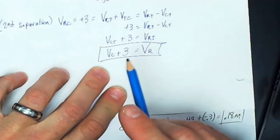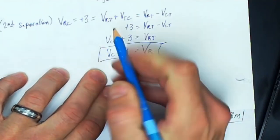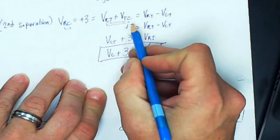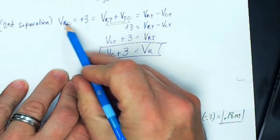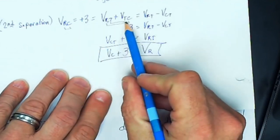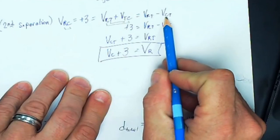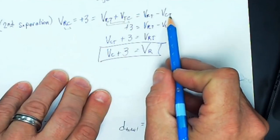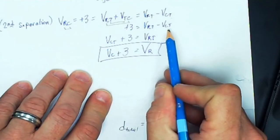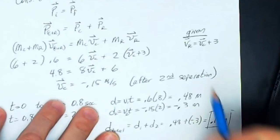Using the relative velocity method: V_RT plus V_TC equals V_RC. The velocity of R with respect to C is three meters per second to the right (positive). Switching subscripts and changing sign, I get VR with respect to track equals VC with respect to track plus three. So VR = VC plus three.